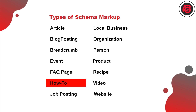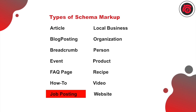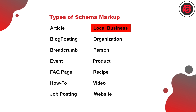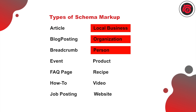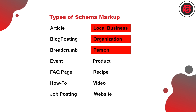The how-to schema is similar to the FAQ schema. Next is job posting, which can be used for job portal websites or recruitment agencies. Local business, organization, and person are three relatively similar schemas — use a person schema for a portfolio, an organization schema if you are part of an organization, or a local business schema for a brick-and-mortar company. Product and recipe schemas are also equivalent: recipe-based websites can include all recipes, while product-based websites can include product details, specifications, item numbers, selling points, MRPs, and so on.